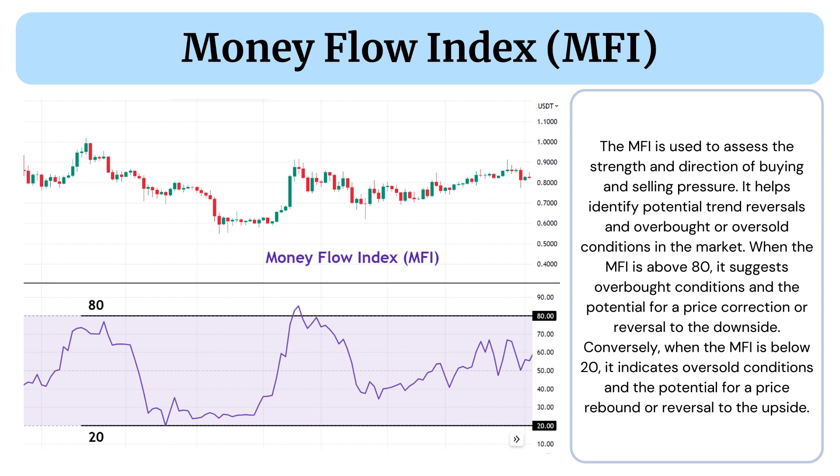When the MFI is above 80, it suggests overbought conditions and the potential for a price correction or reversal to the downside. Conversely, when the MFI is below 20, it indicates oversold conditions and the potential for a price rebound or reversal to the upside.